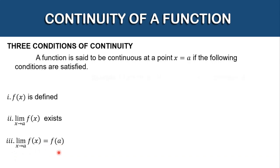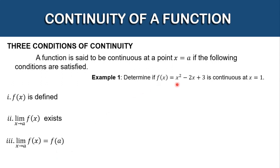Let's have example number one. Determine if the function f of x is equal to x squared minus 2x plus 3 is continuous at x is equal to 1. For the first condition, we evaluate f of 1 by substituting x equals 1: 1 squared minus 2 times 1 plus 3, which simplifies to 2. So our function is defined — its value is 2 when x is equal to 1.